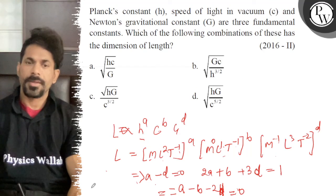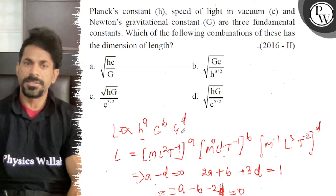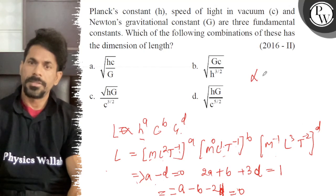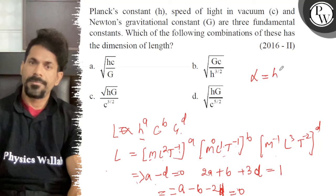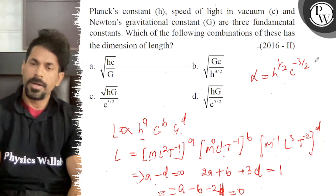So a equals half, b equals minus 3 by 2, d equals half. Therefore, L is proportional to h to the half, c to the minus 3 by 2, G to the half.